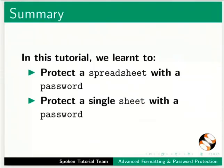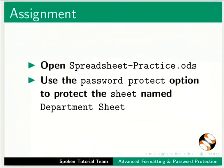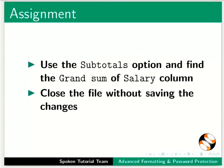This brings us to the end of this tutorial. Let us summarize. In this tutorial, we learned to protect a spreadsheet with a password, protect a single sheet with a password, define ranges for a database, and use the subtotal option and validate cells. As an assignment, open spreadsheet-practice.ods, use the password protect option to protect the sheet named Department Sheet, use the subtotals option to find the grand sum of the salary column, then close the file without saving the changes.